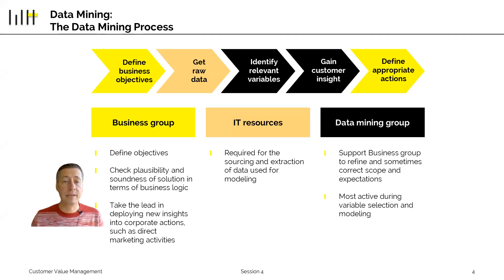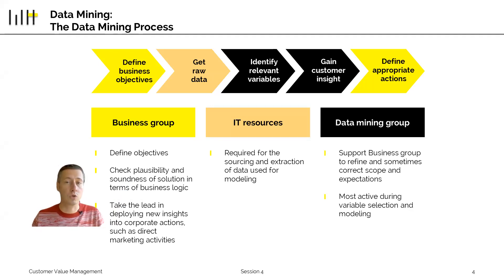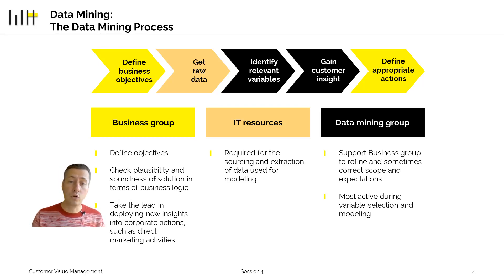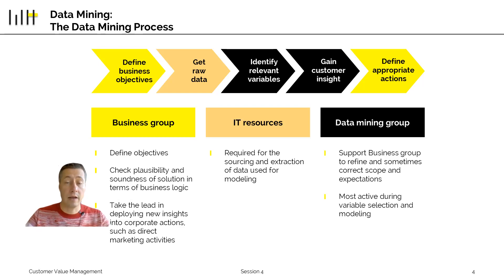The first step is getting the raw data. You will not be able to run an analysis on the entire big database with tens of millions of customers and thousands of columns. You will pick some form of sample. This is usually done by someone from the IT group who is responsible for sourcing and extracting the data used for modeling. The IT person then gives this data to a statistician, a mathematician, a business analyst, or a data mining group, who does the analysis and together with you defines the right objectives to ensure everyone is aligned.